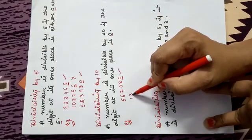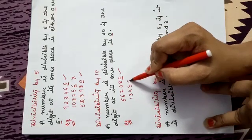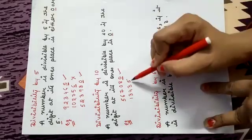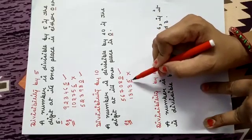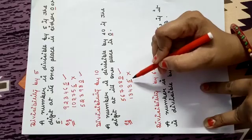If I write 13435, this number is not divisible by 10 because at 1's place it is 5.